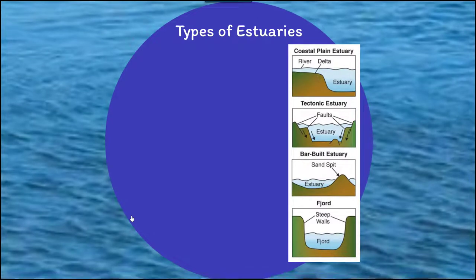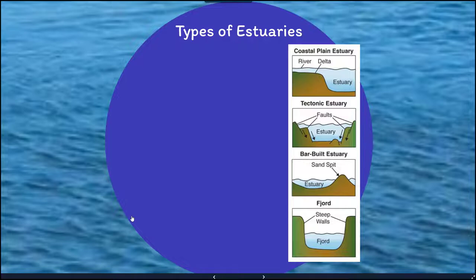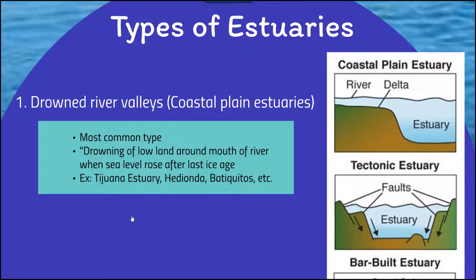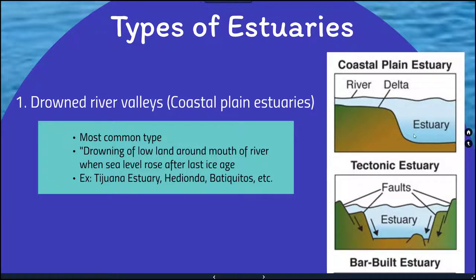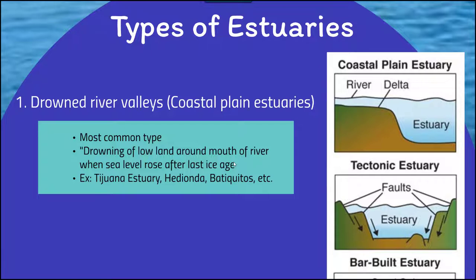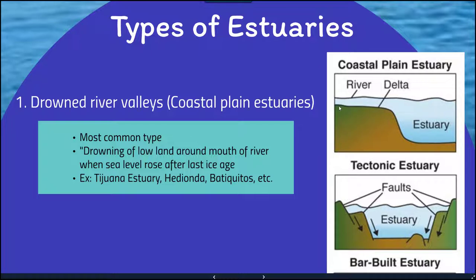There are several different types of estuaries based on topographical features. Drowned river valleys, or coastal plain estuaries, are the most common — formed by the drowning of lowland around the mouth of a river when sea level rose after the last ice age. Examples in San Diego include the Tijuana Estuary, Hedionda, and Batiquitos. Here you can see a river with a delta — sediment built up over time deposited at the mouth of the river — with the estuary forming just below that.